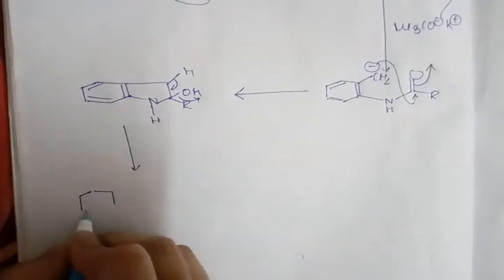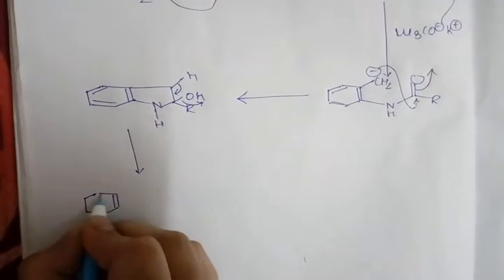One H2O molecule will leave the medium and ultimately we will get the indole derivative. It is substituted at the two position of indole. This R group comes from the acid chloride. This is Madelein synthesis. Thank you.